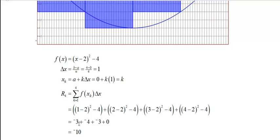Well, notice that the y values are -3, -4, -3, and 0, all multiplied by 1. And we get a -10.